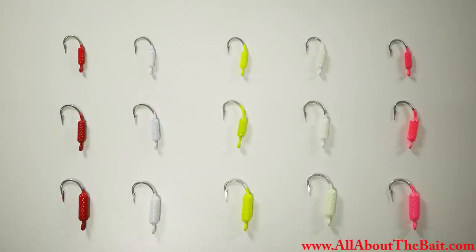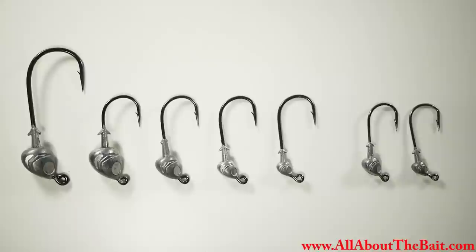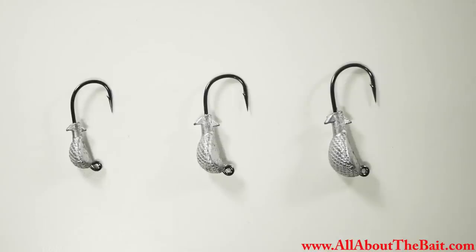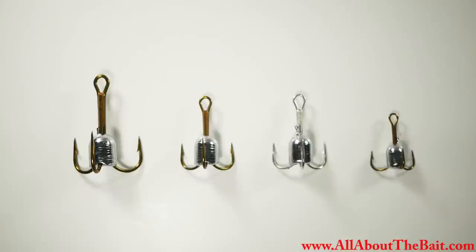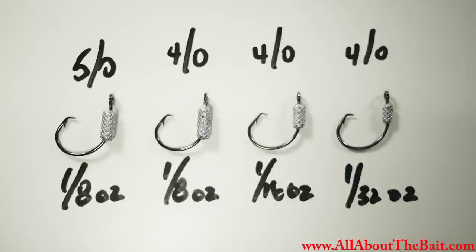It all started with the Yellowtail Snapper Drift Jigs. Next came the Fish Head Jig Heads. To extend the range of the Yellowtail Drift Jigs, I created the Cobra Jigs. The Cobra Jig Head became the foundation for the Bucktail Jigs. To take advantage of the Mullet Run, we have the Snagging Jigs. And now, let me introduce you to the new All About the Bait weighted circle hooks.